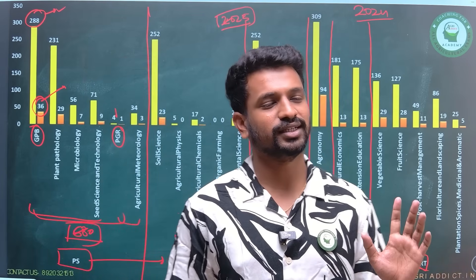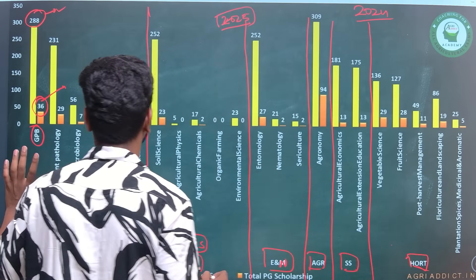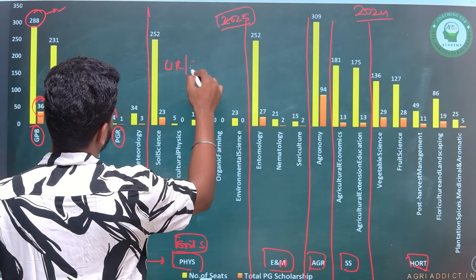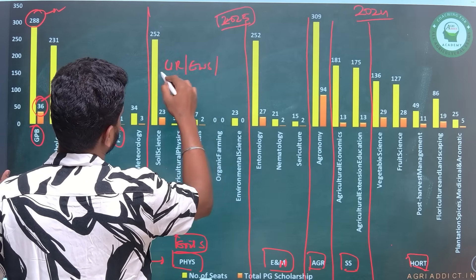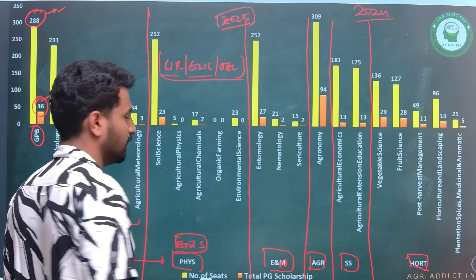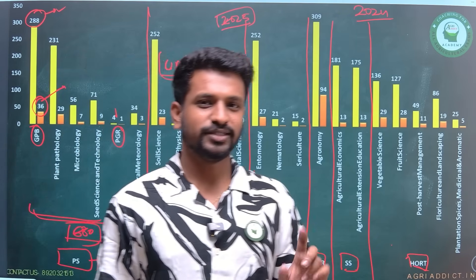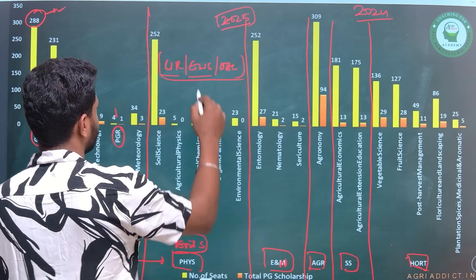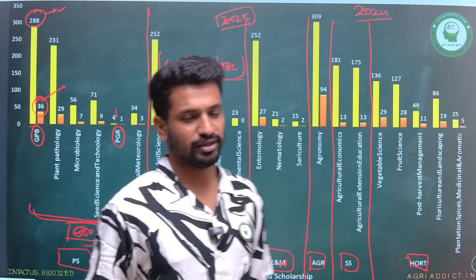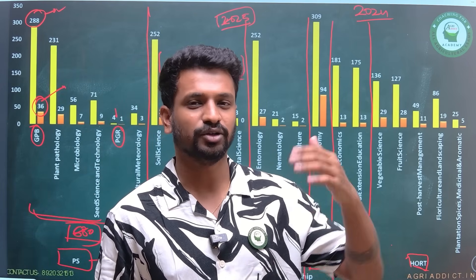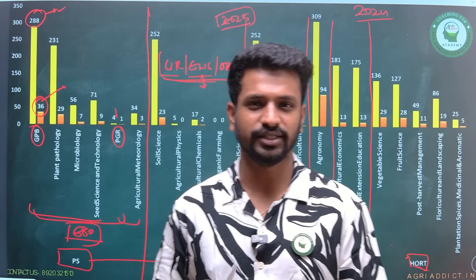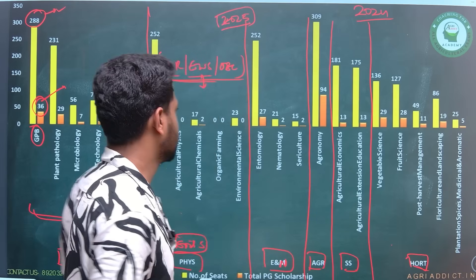Students also ask whether PG fellowship seats are different for different categories or the same for all. Remember, whether it is Unreserved, EWS, or OBC — for all three of these categories the seat allotment is based on reservation, but for the PG fellowship there is no such reservation. Based on merit, the fellowship will be awarded — whoever comes first at the top of the merit list, the fellowship will be awarded to them, irrespective of whether they belong to UR, EWS, or OBC.